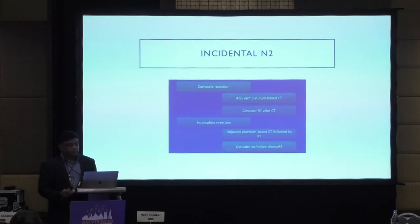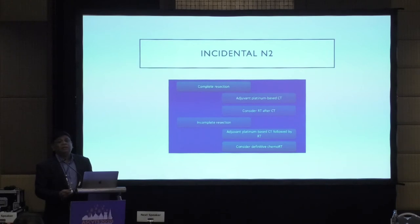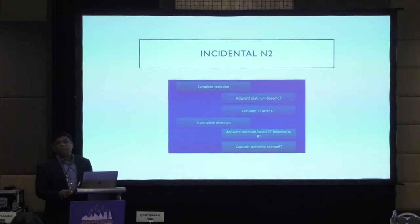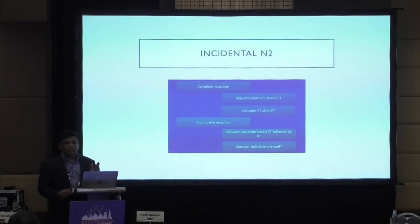For incidental N2 found during surgery: complete resection, then finalized pathology determines adjuvant chemotherapy. Consider RT after chemotherapy if it is squamous, or if it is adenocarcinoma but involves station 7 — subcarinal nodes — where I always consider chemo-RT, as station 7 is the sump node for lung cancer. For incomplete resection, you must do definitive chemo-RT. For potentially resectable disease, you have three options: chemotherapy before surgery, chemo-RT before surgery, or definitive chemo-RT.